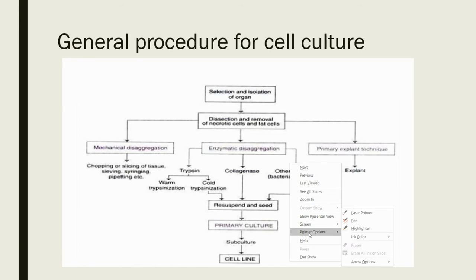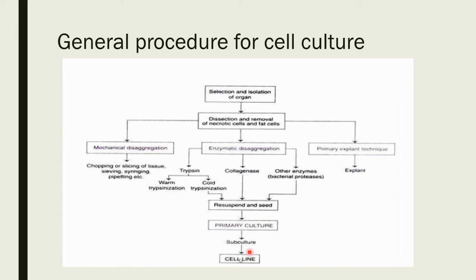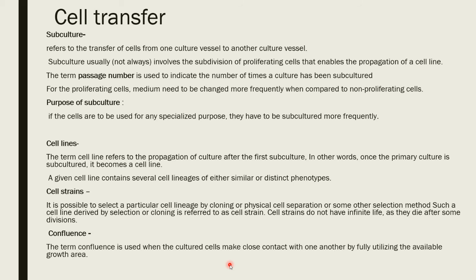Subculturing of the primary culture gives rise to cell lines. With the help of a cell line, we can choose a particular cell lineage, and from the cell lineages we can get the cell strain. These can be used for various purposes, such as generating desired products or obtaining cells for transplantation. Cell transfer refers to the transfer of cells from one culture vessel to another, which is very important in the culturing of cells.